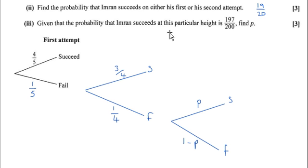The problem says, given that the probability that he succeeds at either his first or second or third attempt is 197 over 200, find P.